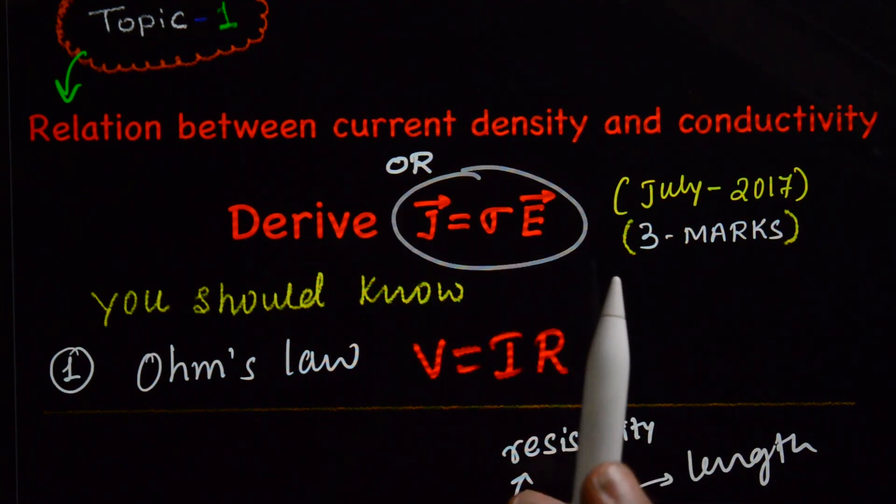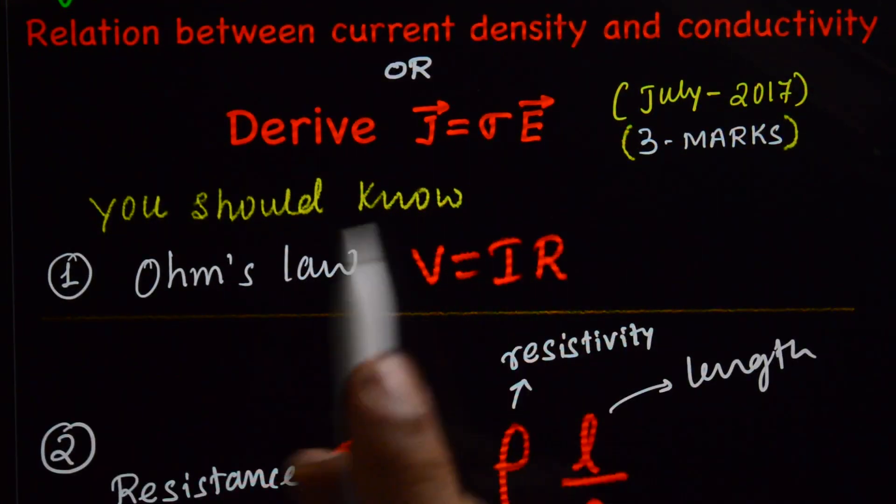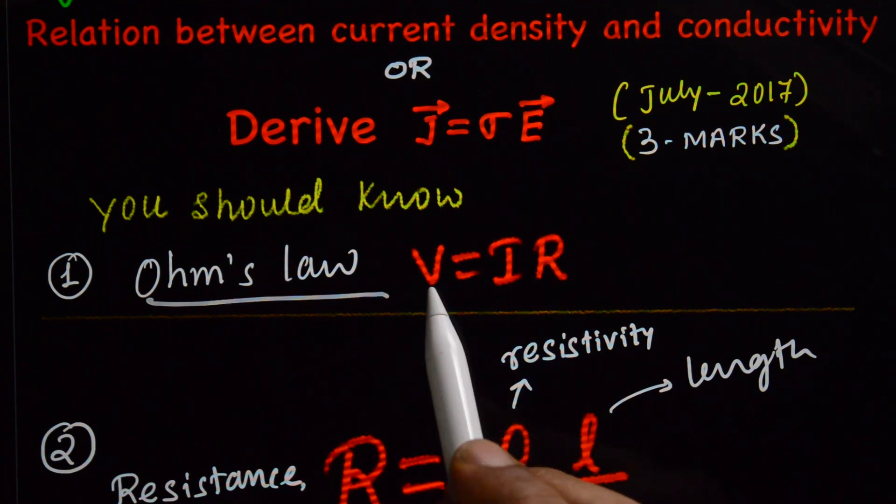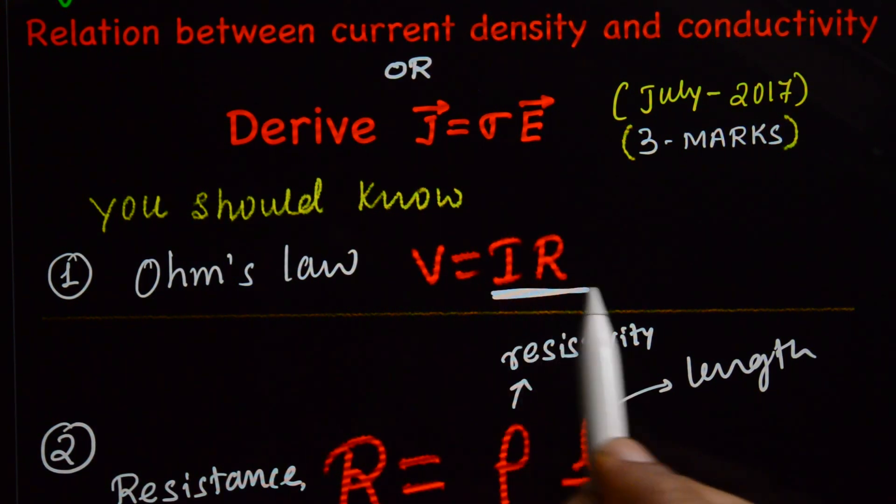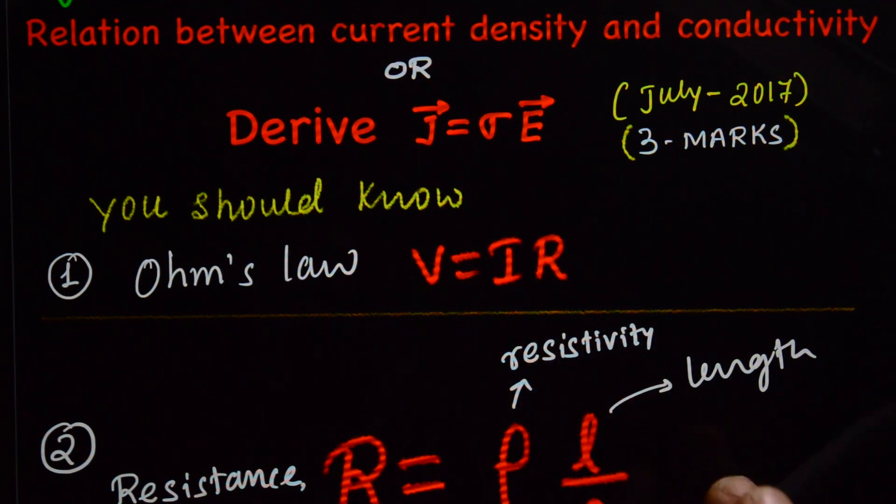To derive this expression, you should know Ohm's law, that is V, potential difference is equal to I into R, current into resistance.